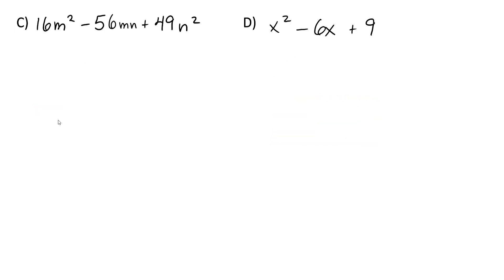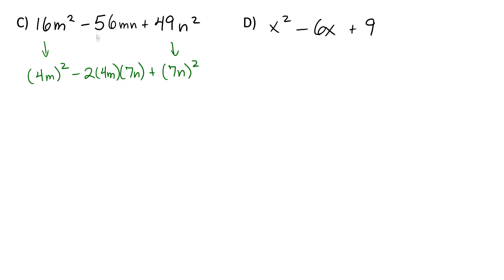Now let's look at some more examples. For part c, we can express 16m squared as 4m in parentheses squared, and 49n squared as 7n in parentheses squared. That gives us clues to check whether negative 56mn fits the form minus 2ab where a is 4m and b is 7n. Negative 2 times 4m times 7n does multiply out to negative 56mn, so this works and factors into 4m minus 7n squared.